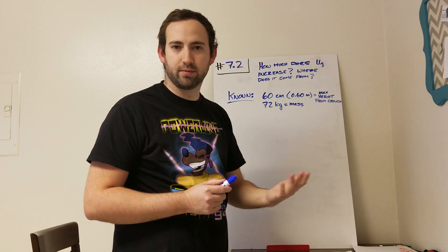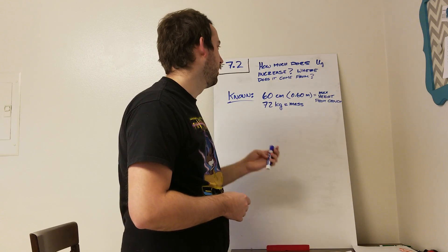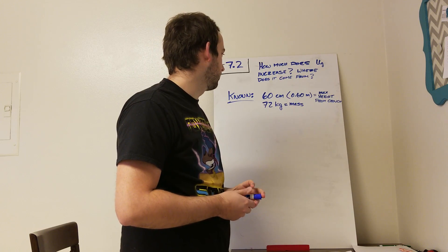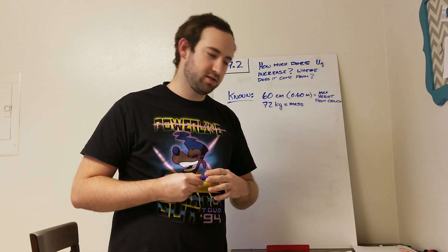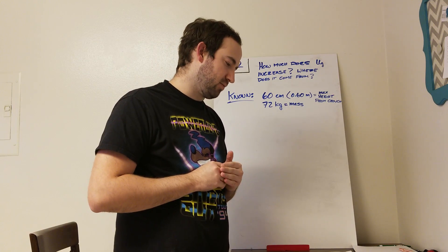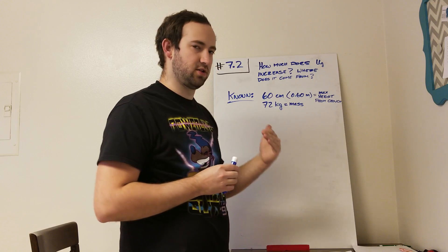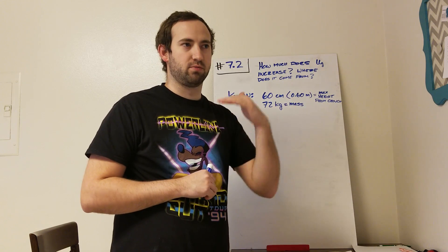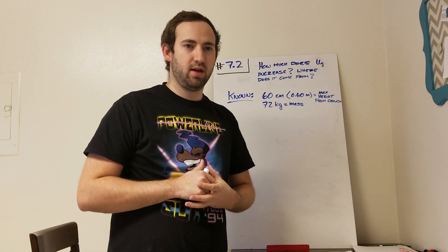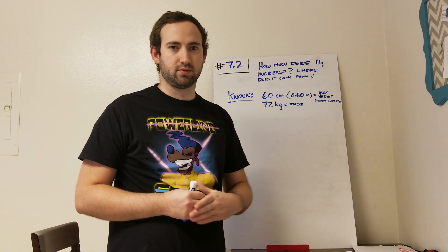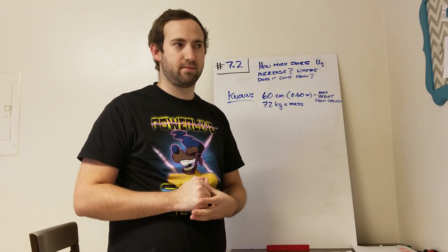They gave it in centimeters. I converted it to meters since that's what we always do. And then the mass that it told us to use was 72 kilograms. And what it wants to know is how much does the gravitational potential energy increase when that jump occurs, at the height of that jump. And then it wants to know also where that energy comes from to increase that potential energy.